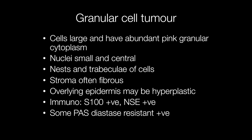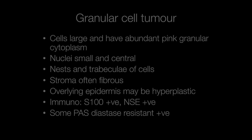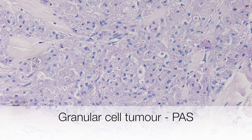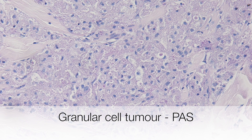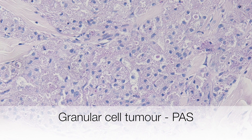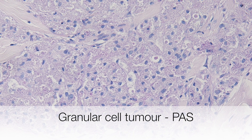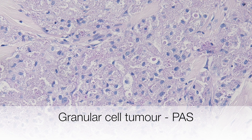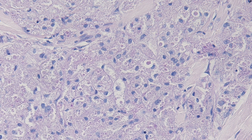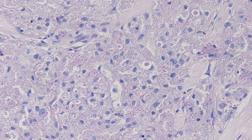Useful immunostains for granular cell tumours include S100 and NSE, both of which are positive, and a proportion of granular cell tumours show PAS diastase-resistant staining. This granular cell tumour has been stained for PAS and there is no magenta staining, so the PAS stain is negative. This is not surprising as only approximately 30% of granular cell tumours show positive PAS staining, illustrating that PAS is not a particularly useful stain given that the majority fail to stain for it.